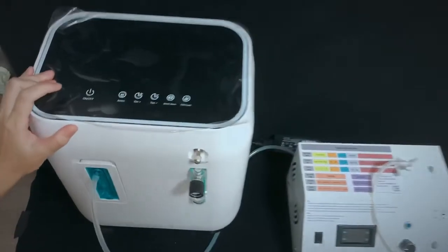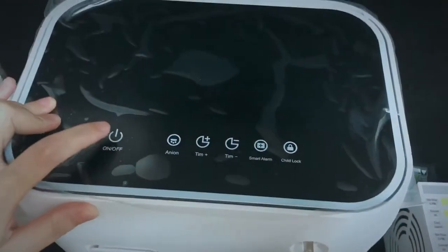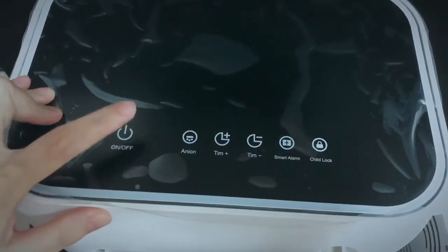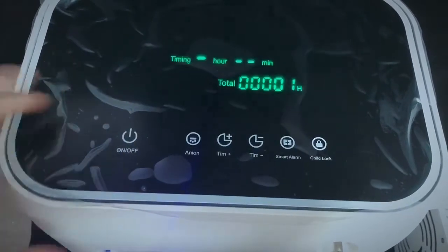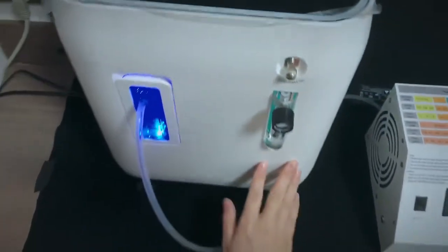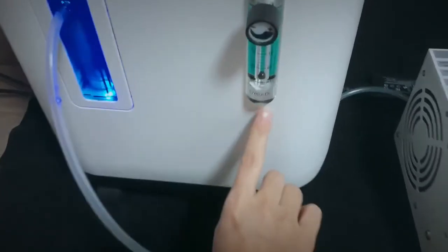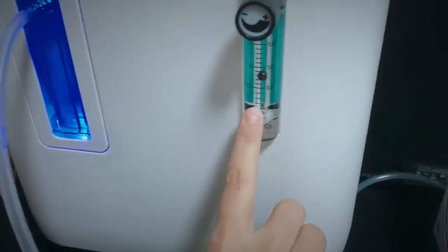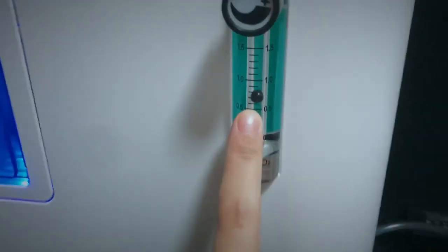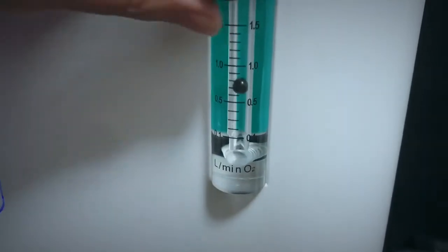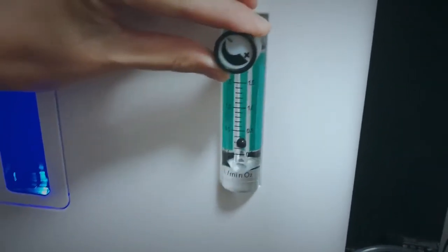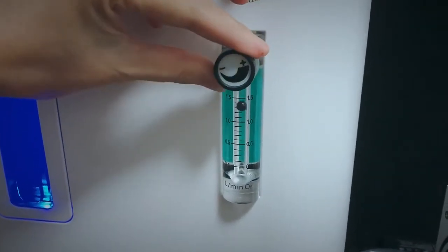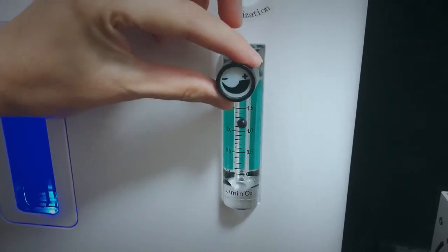Now, how to use the oxygen concentrator: switch it on, then you can see the flow meter, the ball flows. Then you need to set which flow you need, from 0.1 to 1.5.